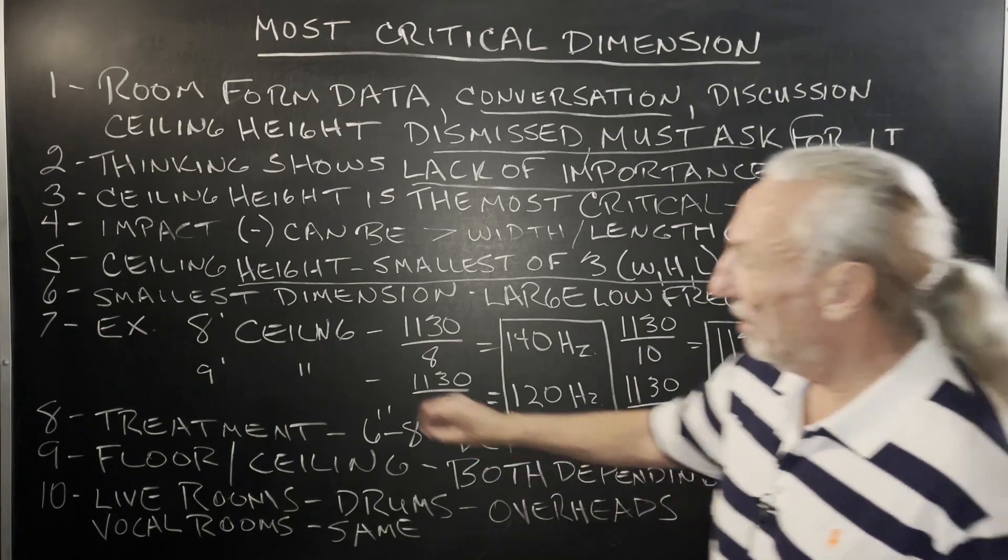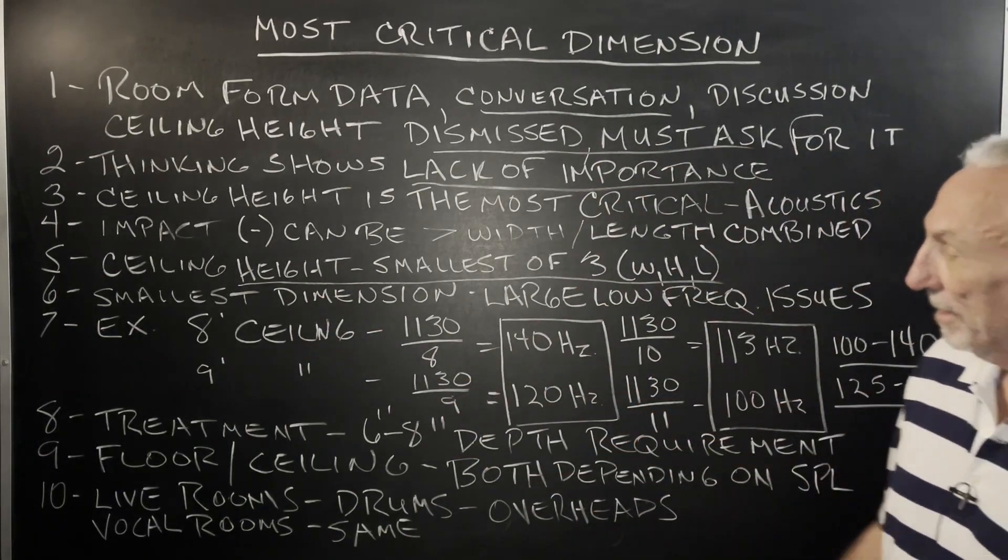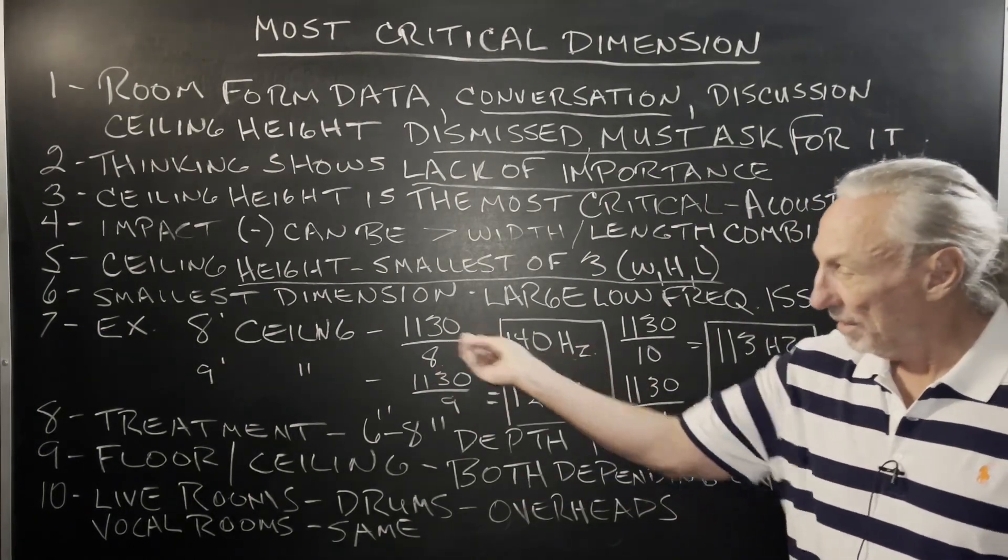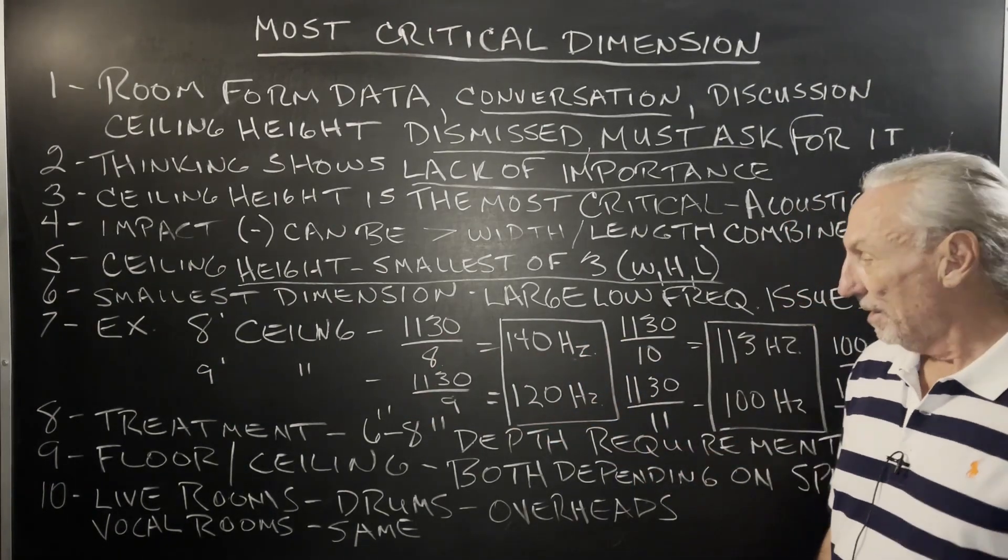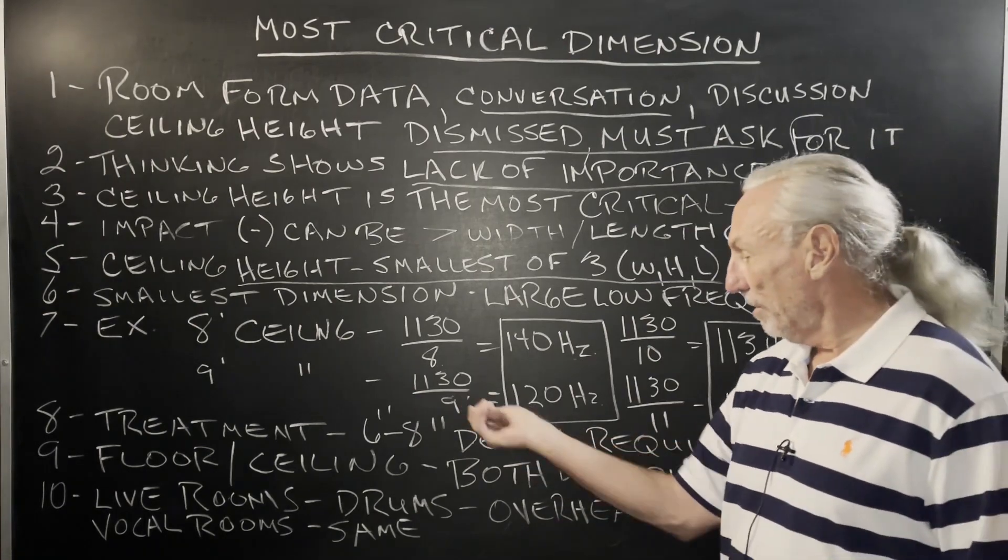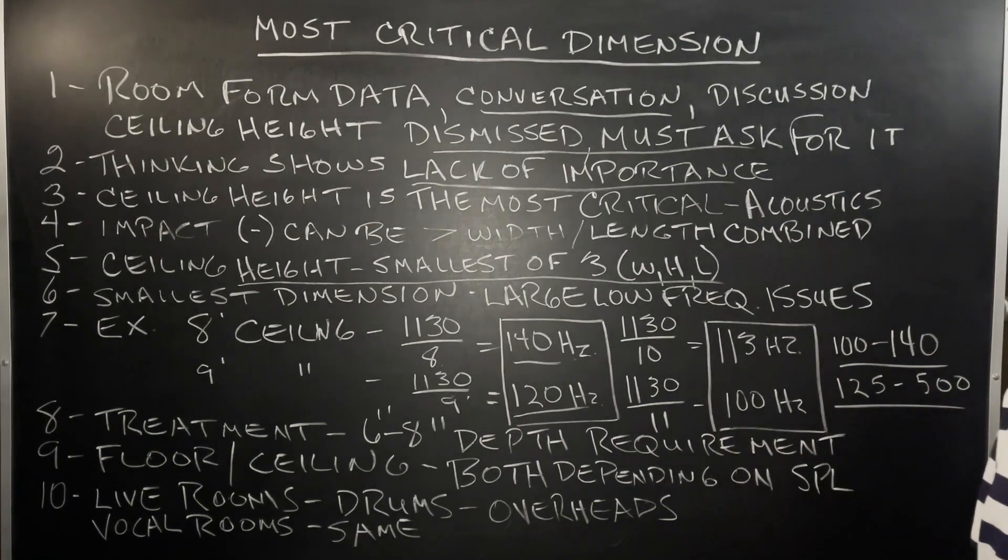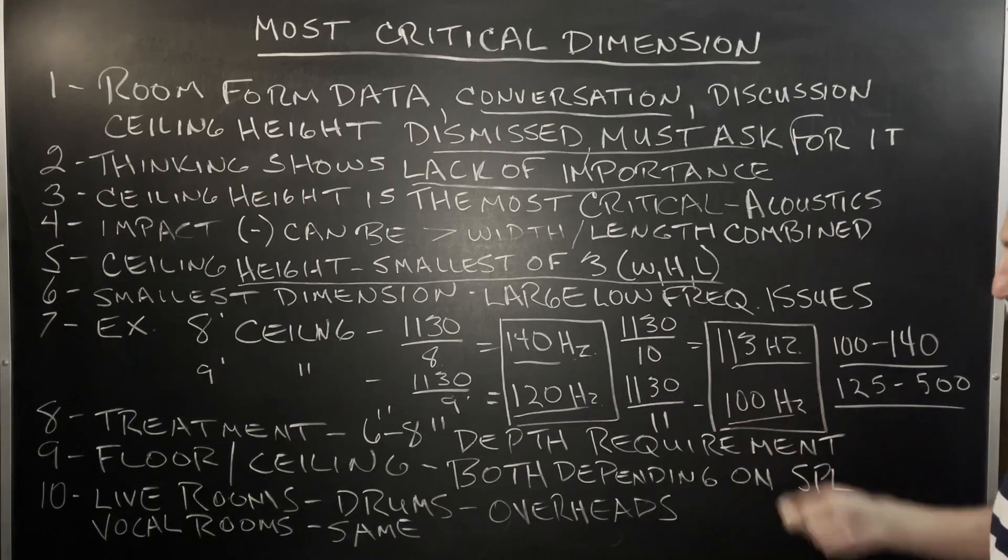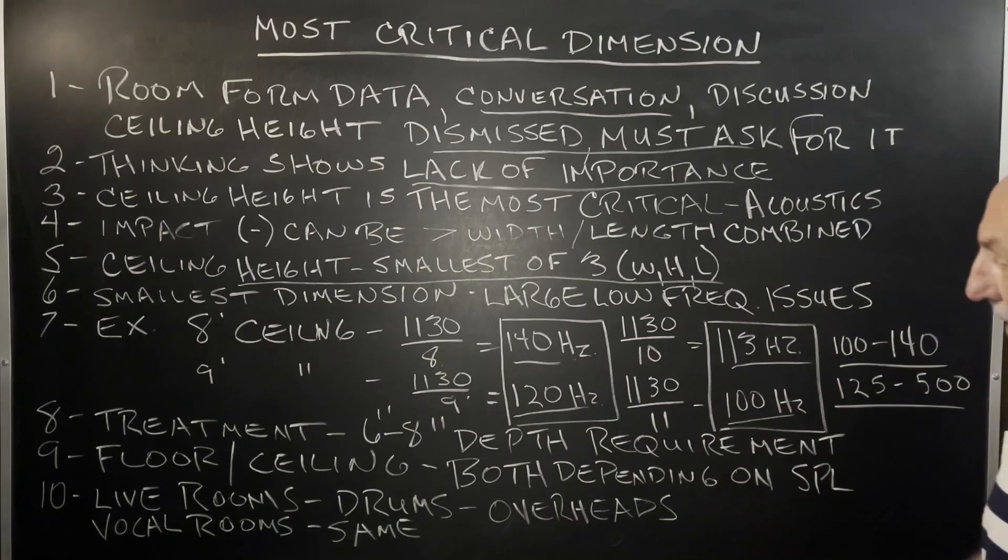So when we have the smallest dimension, we're going to have the largest low frequency pressure issues. Speed of sound, eight foot. 140 cycles. 70 on this side, 210 on this side. Both, which you don't want. Nine foot gets a little better. You can start to see relationships here. There's 20 hertz difference per foot. Look at here. It's predictable and consistent. Then you've got the fundamentals and the harmonics to worry about.